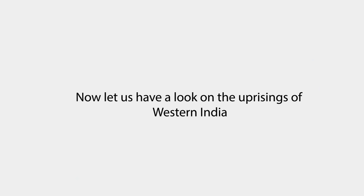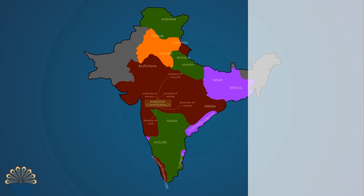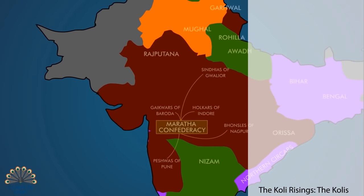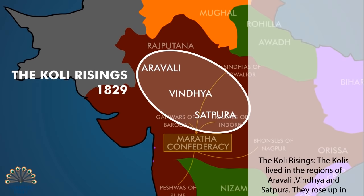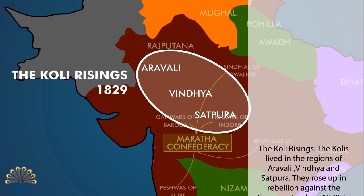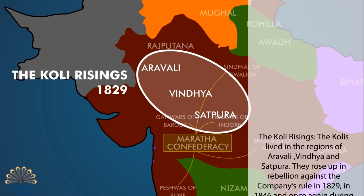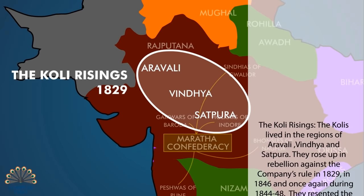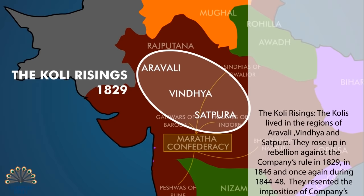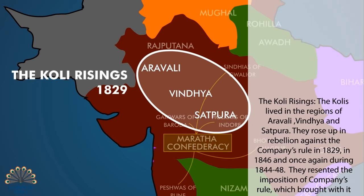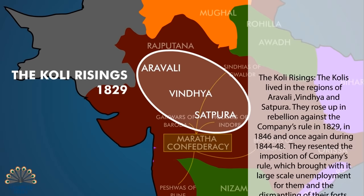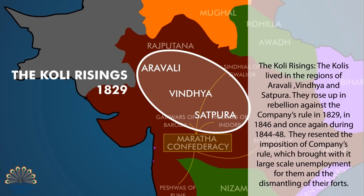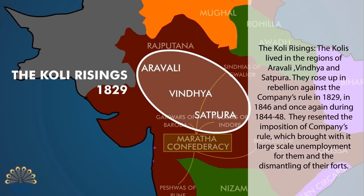Now let us have a look on the uprisings of Western India. The Koli Risings: The Kolis lived in the regions of Aravalli, Vindhya and Satpura. They rose up in rebellion against the company's rule in 1829, in 1846 and once again during 1844-48. They resented the imposition of company's rule, which brought with it large-scale unemployment for them and the dismantling of their forts.